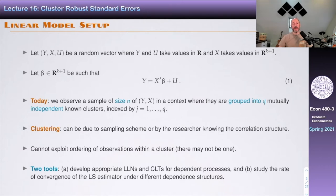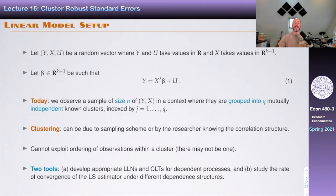For simplicity, we'll stick to the situation where we have schools and students within schools. One important thing is that we cannot exploit the ordering of observations within a cluster because there may not be such an ordering. With students, unless you know exactly how their friendship relationships work, it's hard to tell whether two given students are more correlated than any other pair.